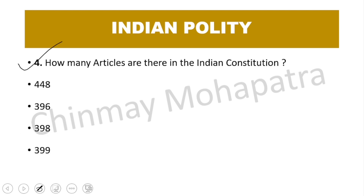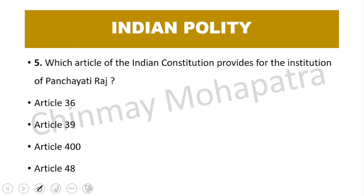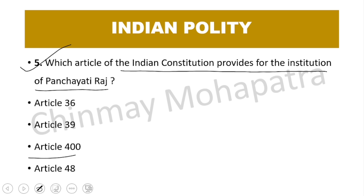Question 4: How many articles are there in the Indian constitution? The right answer is 448. Question 5: Which article of the Indian constitution provides for the institution of Panchayati Raj? The right answer is Article 40.